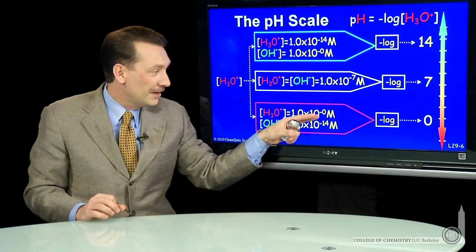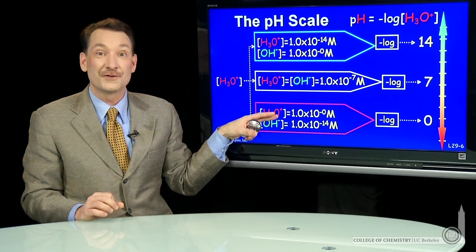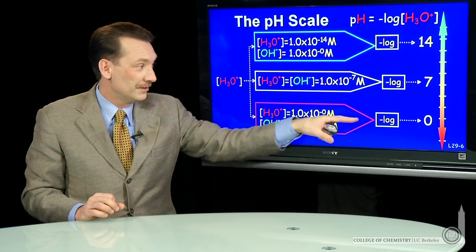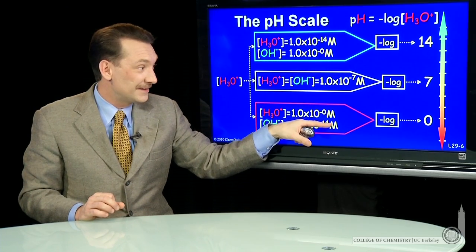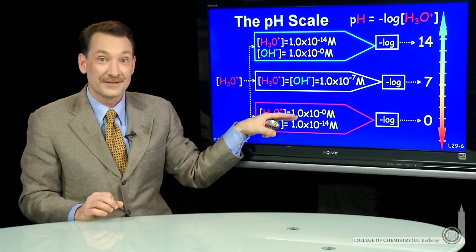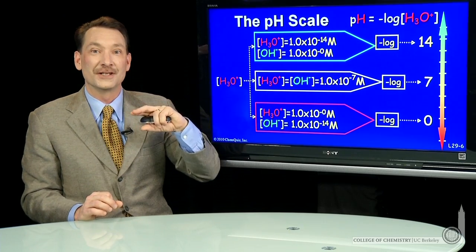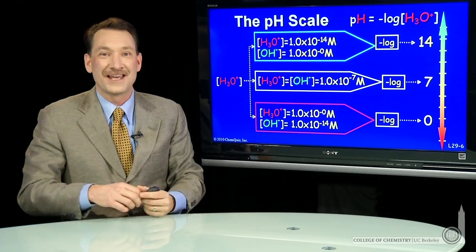So we have a scale based essentially on the exponents of the H3O+ concentration: 0, 7, 14, going from acidic solution, high concentration of H3O+, to basic solution, low concentration of H3O+. That's the pH scale.